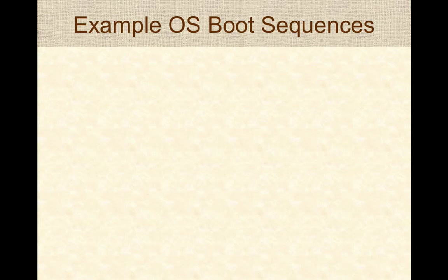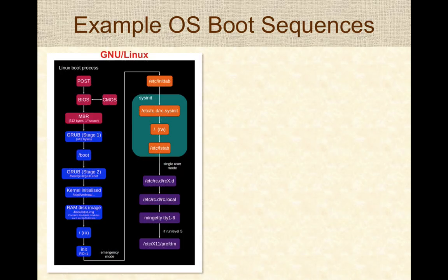Here are a couple of examples of boot sequences. The GNU Linux startup process begins with POST and the BIOS loading the master boot record. The Linux bootloader is called Grub. Stage one of Grub loads stage two, and stage two then finally loads the Linux kernel, which starts running on the machine and performs the rest of its initializations and operations.